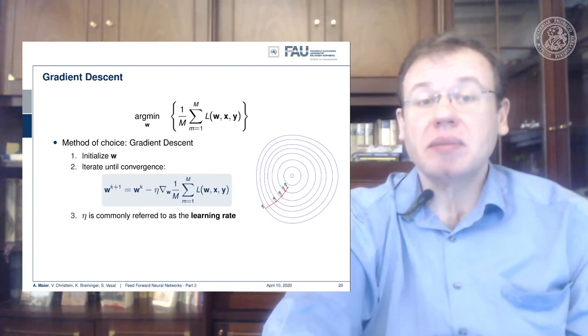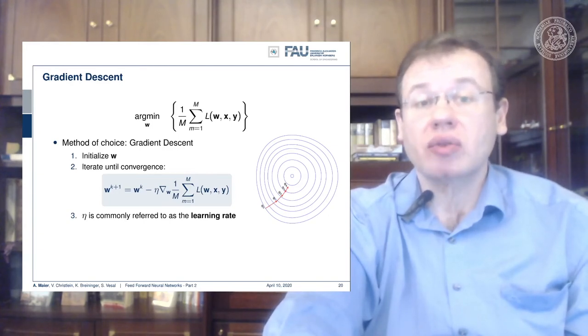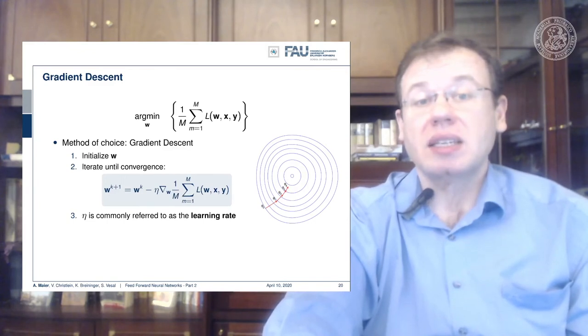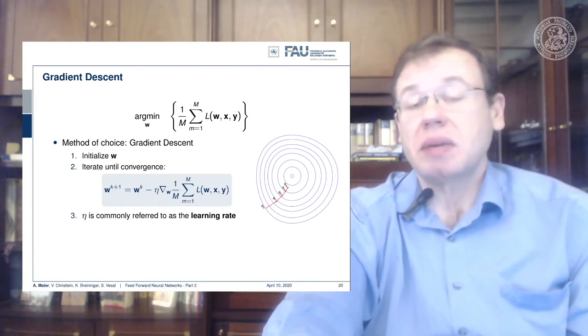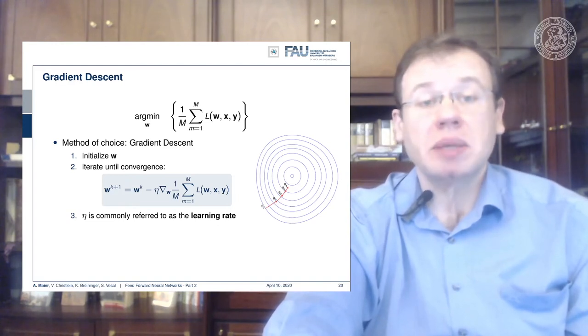We choose to find the minimal w that minimizes the loss over all training samples. In order to do so, we compute the gradient and we need some initial guess for w. There are many different ways of initializing w.